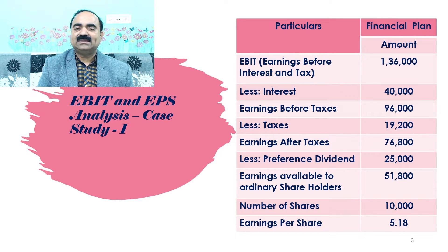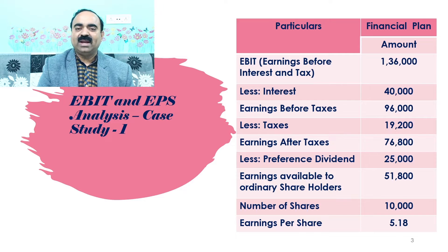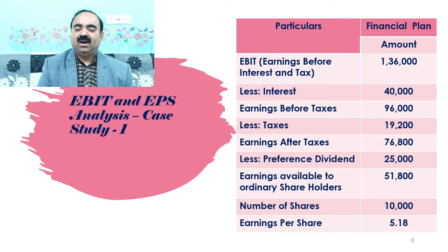After subtracting ₹40,000 interest from EBIT of ₹1,36,000, we obtain earnings before taxes of ₹96,000. The company is in the 20% tax bracket. Tax amount calculation was shown in the next slide under working note number 2. Taxes are calculated as ₹19,200. After deducting taxes of ₹19,200 from earnings before taxes of ₹96,000, we got earnings after taxes of ₹76,800. We need to subtract preference dividend from earnings after taxes in order to calculate earnings available to ordinary shareholders. The preference dividend was calculated as ₹25,000 under working note number 3.